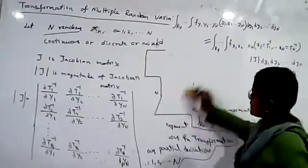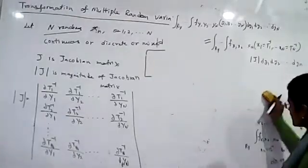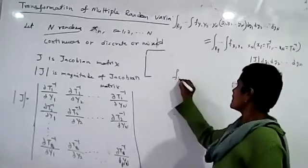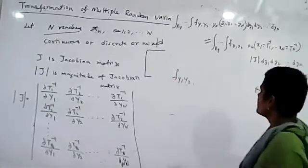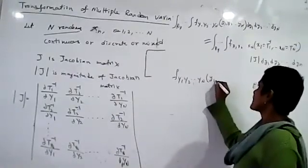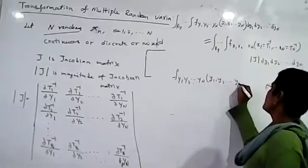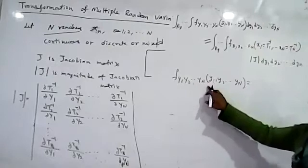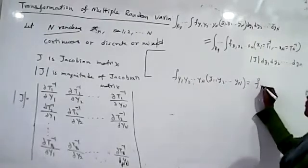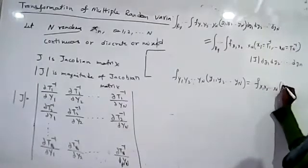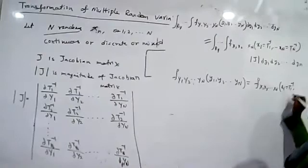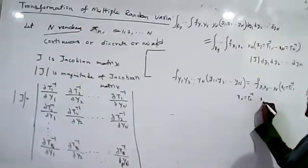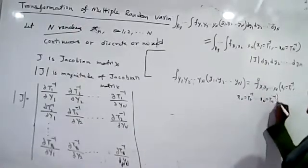If you remove the integration parts, you get the relation between the probability density function of the transformed variable y and the input variable x. So: f_{y_1,...,y_n}(y_1,...,y_n) = f_{x_1,...,x_n}(x_1,...,x_n) evaluated at x_1=T_1^{-1}, x_2=T_2^{-1}, ..., x_n=T_n^{-1}, multiplied by |J|.